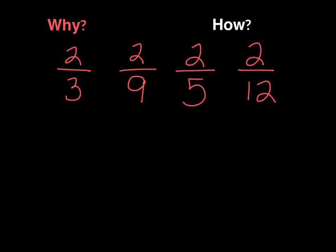So now we have the opposite example. This time I have all of my numerators are the same. So I have a 2 on the top of all of these fractions, but my denominators are different.